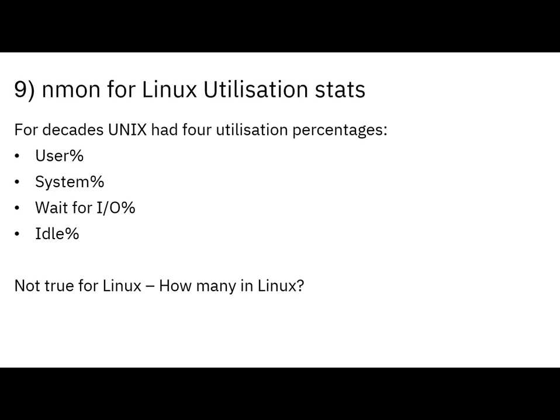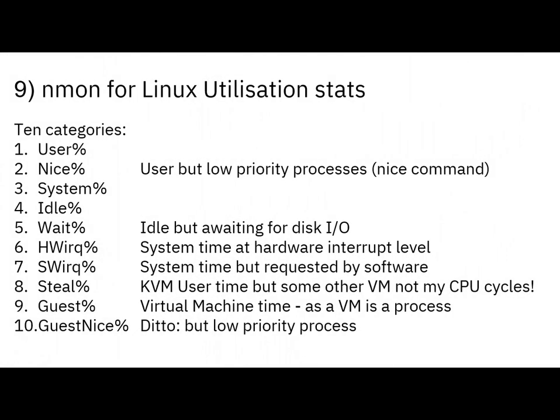We've now got a whole bunch more utilization stats for Linux — and I want you to shout at the screen how many you think we have, because it was a bit of a shock to me. The answer is we now have 10 utilization stats for Linux. You can see user, system, idle, and wait are there — the original ones as we'd expect. There's a whole bunch more. The nice value is user mode but with a lower priority — you get it because of the nice command, which runs a job at a lower priority. In my humble experience, I've never seen anybody use that. Maybe Linus uses the nice command to do a background compile of the kernel while he reads his email, but nobody else on the planet does that.